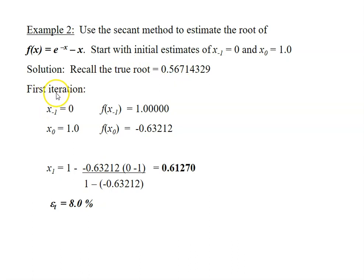Let's look at the first iteration. Starting with two different initial guesses, they calculated the function for each of these x values and they got 1 and negative 0.63212 for x0 equals to 1. So then they substitute these values into the secant formula to get the estimated root for the first iteration as 0.61270.